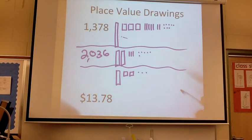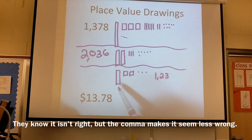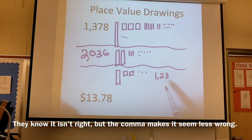Kids will make a mistake of calling this 1,203. They know that that's a thousand, they know that those are two hundreds and they know that that's three, but we know that that doesn't say 1,203.